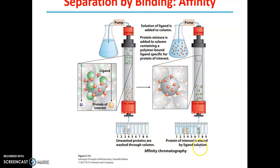You add the ligand solution to make the protein of interest elute faster. Without the ligand solution, the protein here will not elute. That is why this is called affinity chromatography — because the separation is based on the affinity of the protein for a particular ligand.